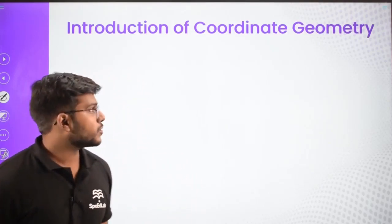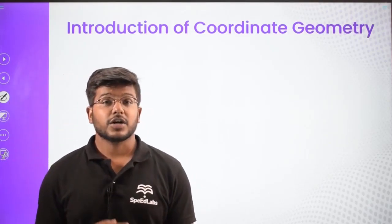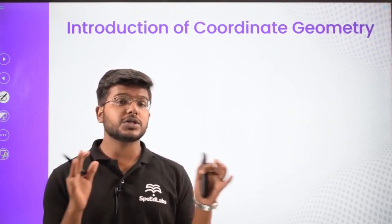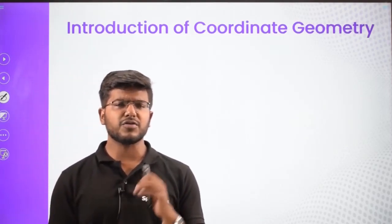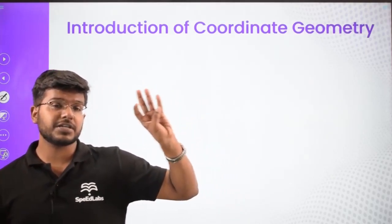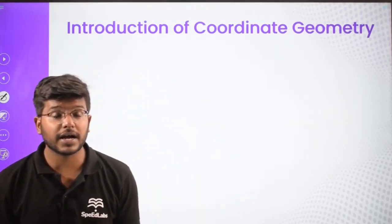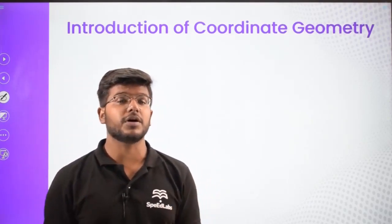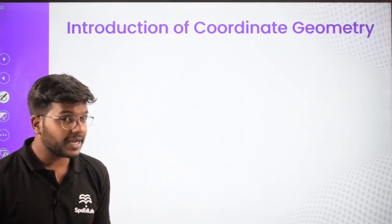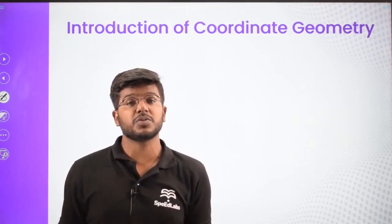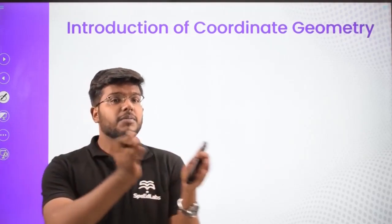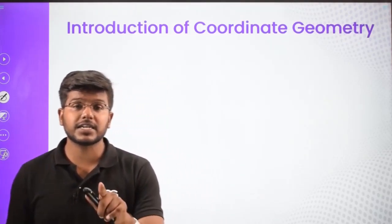We are going to start a new chapter: Straight Lines. Straight lines is part of a module called Coordinate Geometry. In this module we have basically five chapters: straight lines, circles, parabola, ellipse, and hyperbola. Together these five chapters make a great mathematics module — that is Coordinate Geometry. We are giving an introduction to coordinate geometry, which you have studied in junior classes as well, so first we will revise some points and then start our first chapter, Straight Lines.